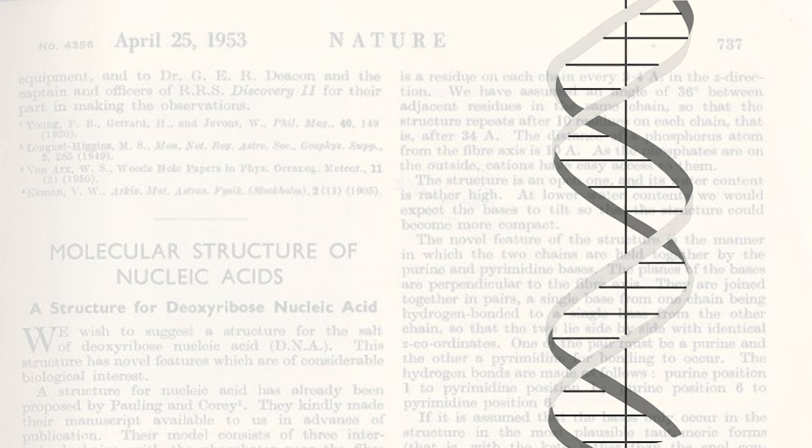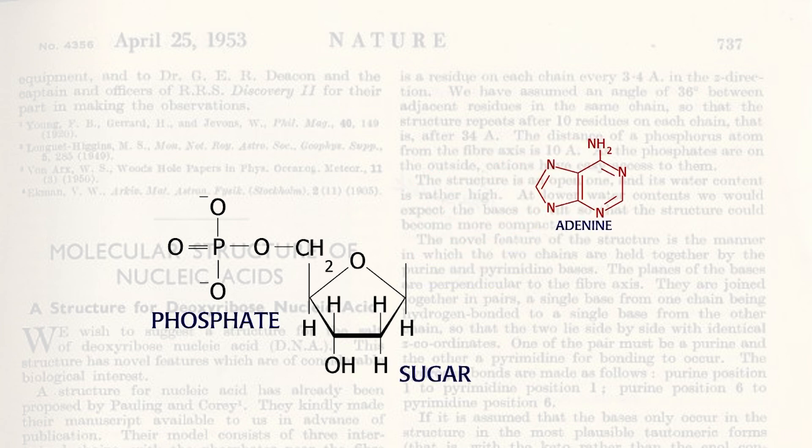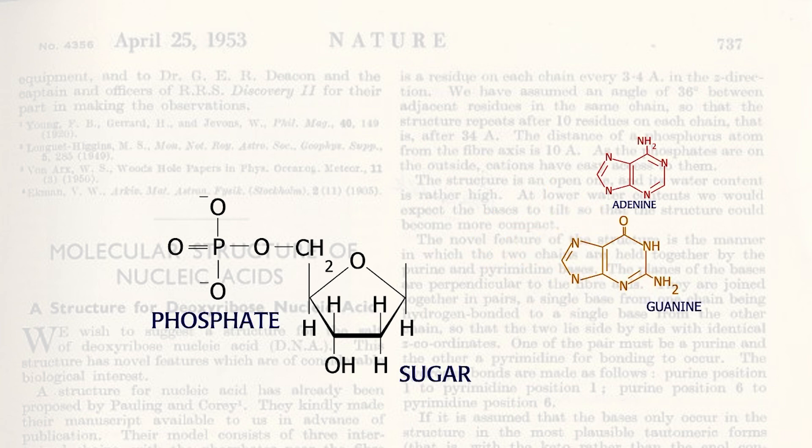Phoebus Levin had shown that each nucleotide building block of DNA is made up of a phosphate group linked to a deoxyribose sugar, which in turn is linked to one of four nitrogenous bases: adenine, guanine, cytosine, and thymine.